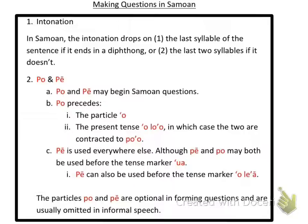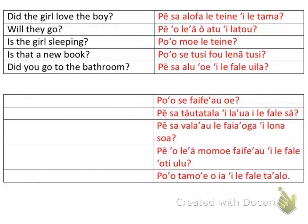If anything is confusing, go back and rewatch from the beginning. I'm going to give you some example sentences. First: 'Did the girl love the boy?' — thinking in formal speech. What do I use after the po or pe? It's past tense, so 'pe sa alofa le teine i le tama.' I would use pe there because there's no particle 'o'.